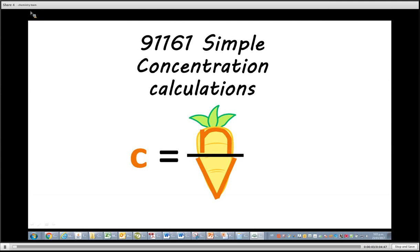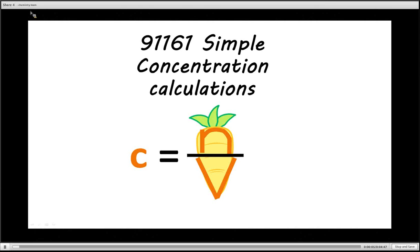Kia ora and welcome to this short video on simple concentration calculations for the 91161 standard. And this is the formula we're going to use: C is equal to N over V.